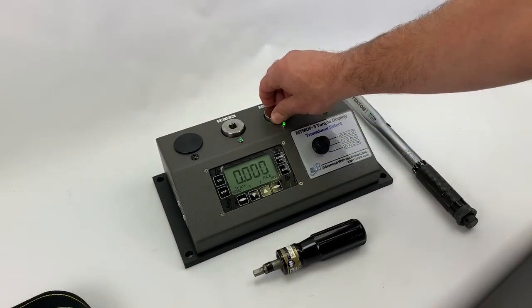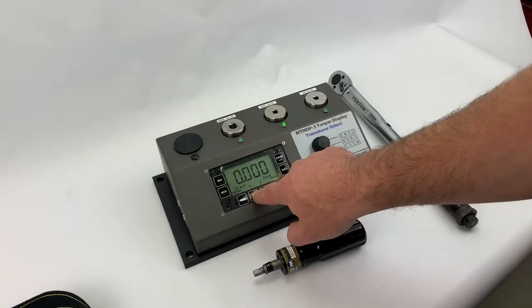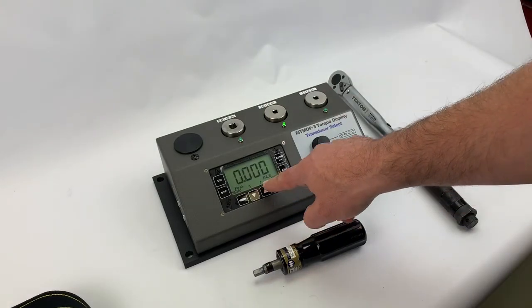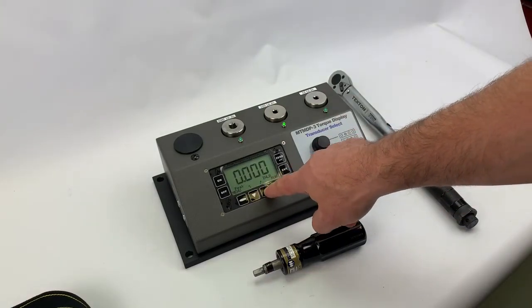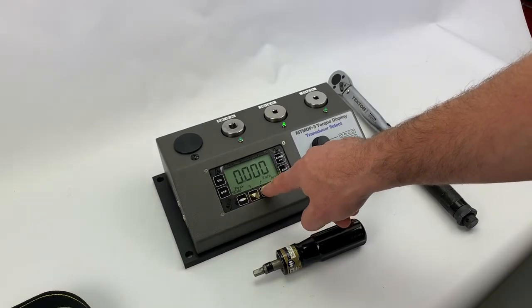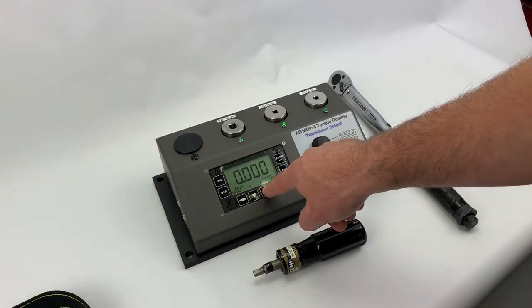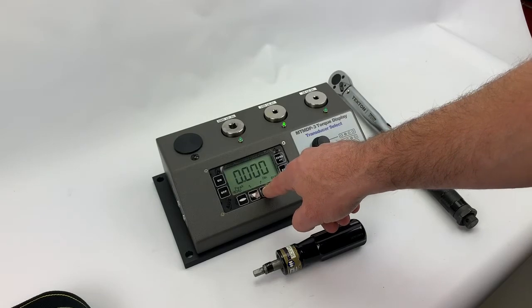More useful would be peak mode, so I'll switch it to peak. It's showing me the units in inch-pounds. I could change the units to inch ounces, metric units, foot-pounds, or Newton meters.